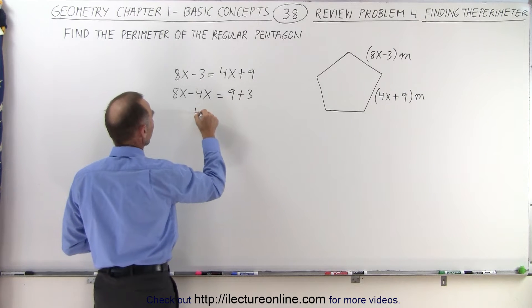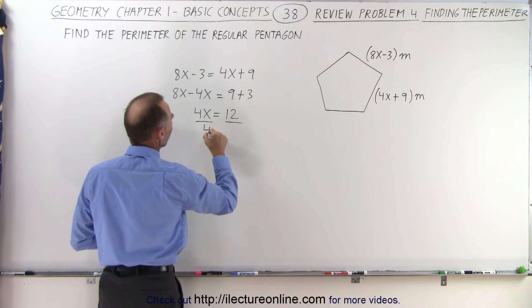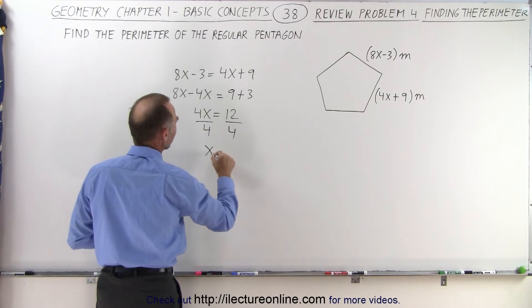Combining like terms: 4x equals 12. Divide both sides by 4, giving us x equals 3.